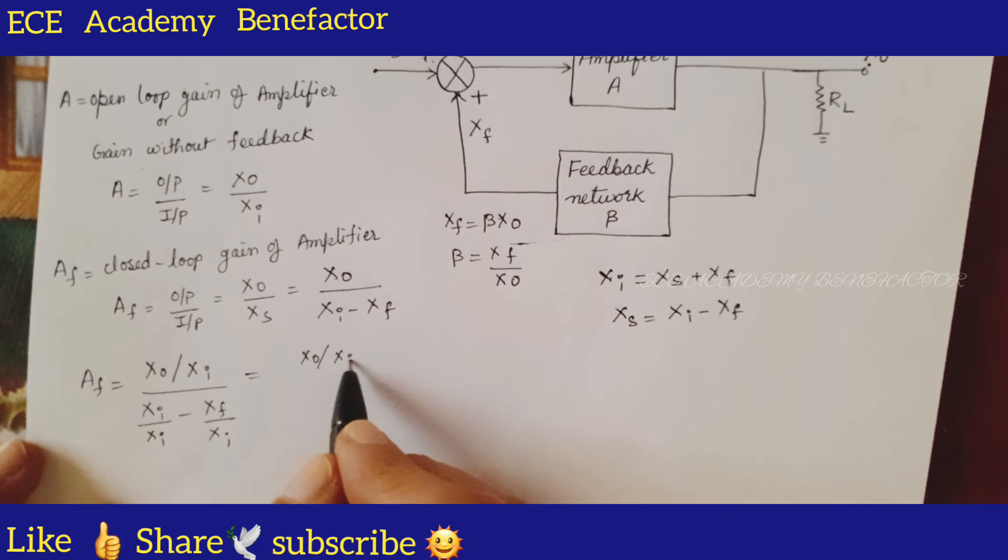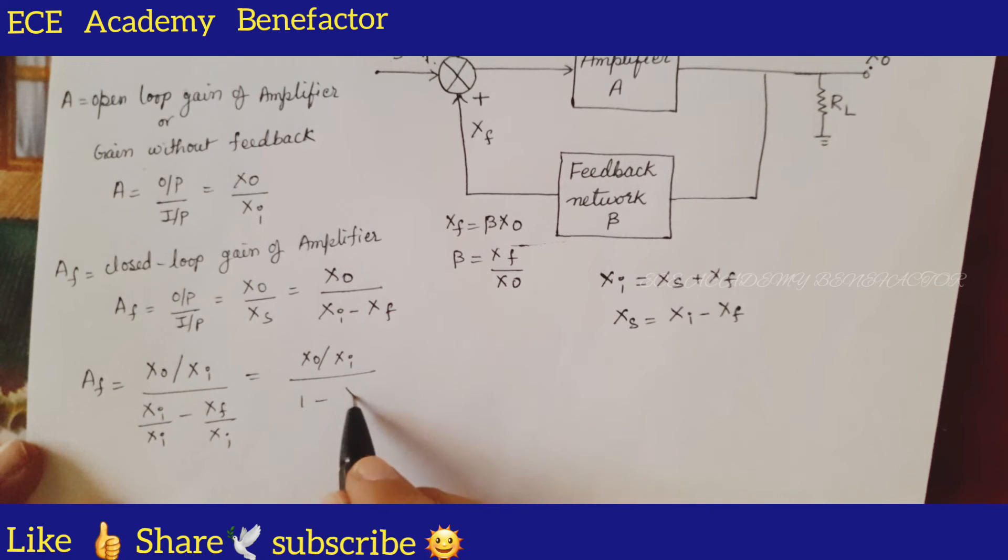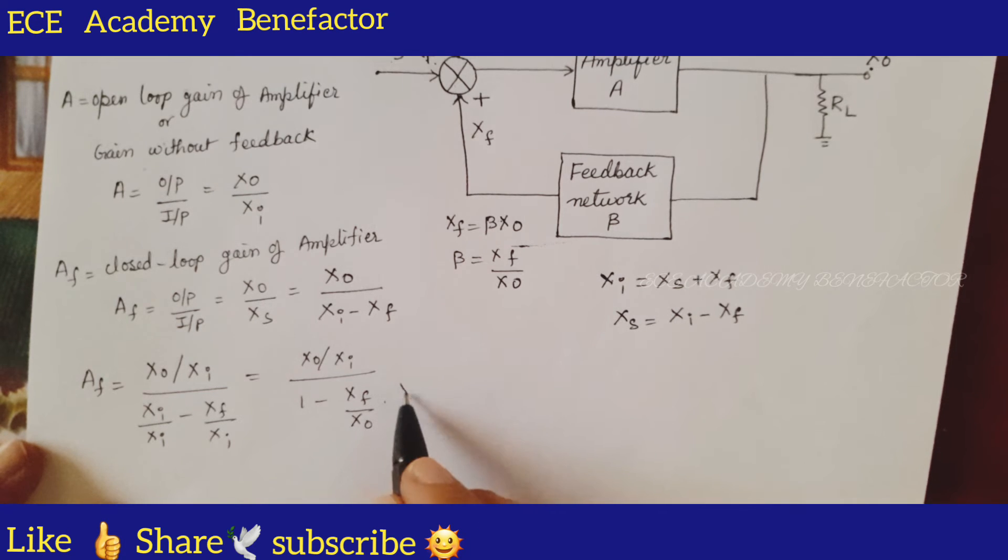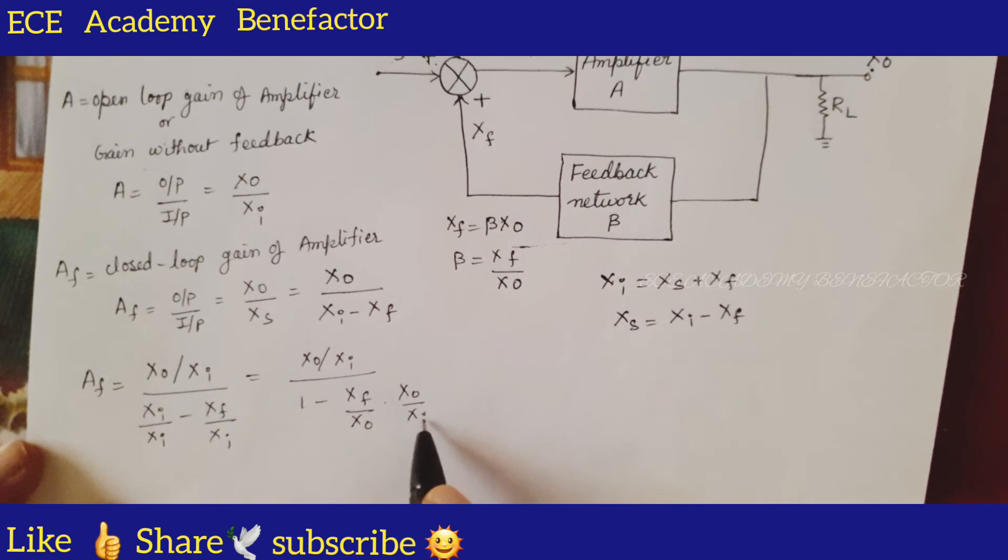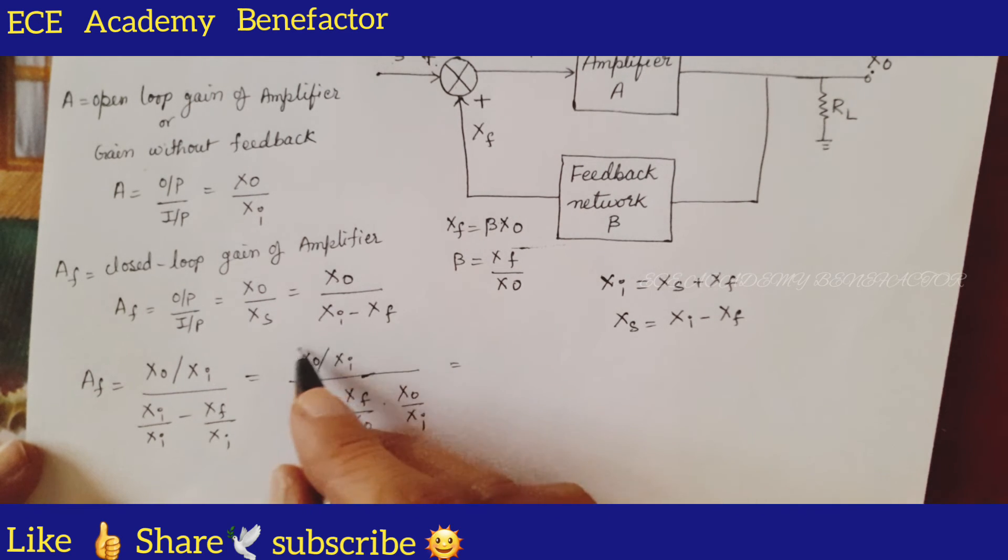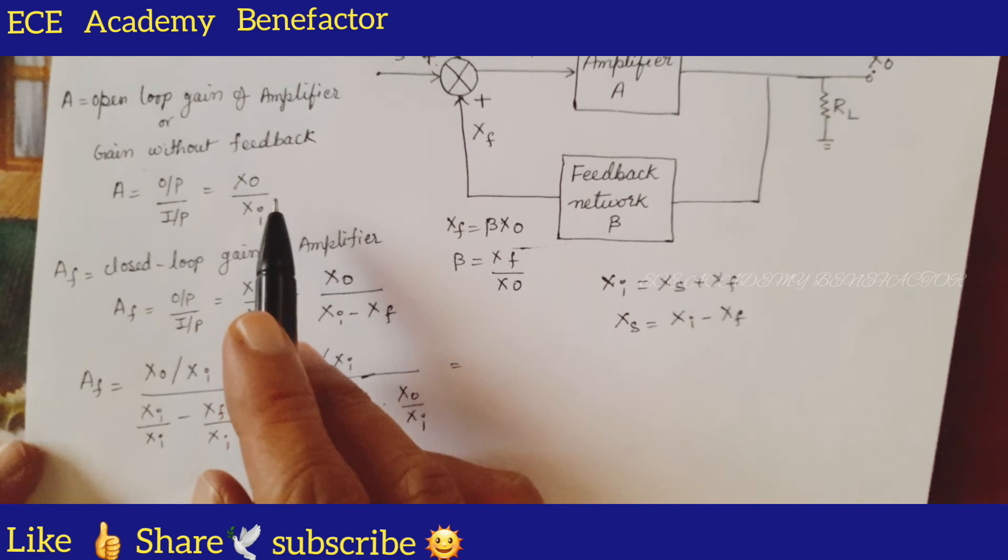It will be (Xo/Xi) divided by [1 minus (Xf/Xo) times (Xo/Xi)]. That is, we have multiplied and divided by Xo. What is Xo by Xi? It is A.